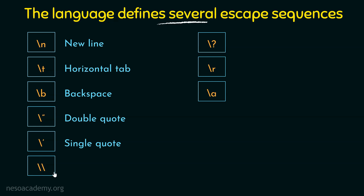Next we have two backslashes. Since a single backslash is used to represent an escape sequence, if you want to print a backslash on the screen, you have to use double backslash. If you just use a single backslash, the compiler thinks it is an escape sequence and tries to look for one. So by using double backslash, the first backslash signals an escape sequence and the second backslash represents an actual backslash to be printed. Double backslashes mean we are printing a backslash on the screen.